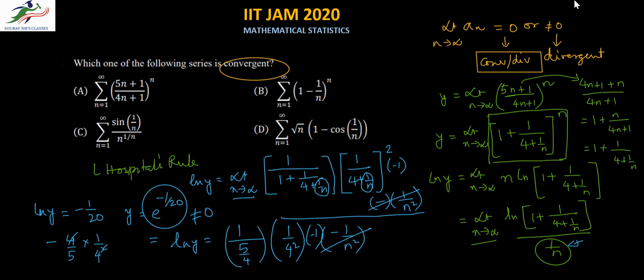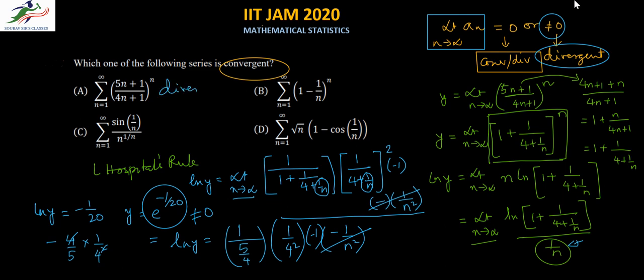Since ln y equals a finite non-zero value, the limit of a_n as n tends to infinity is not equal to zero. Therefore this series is divergent.